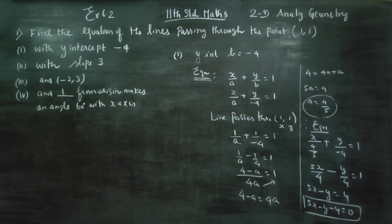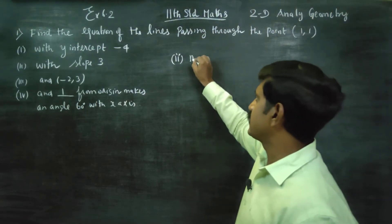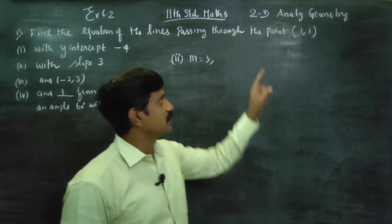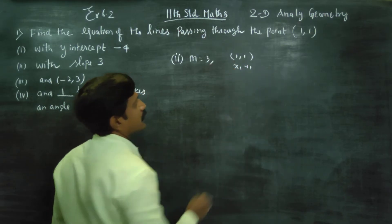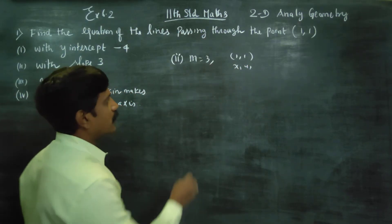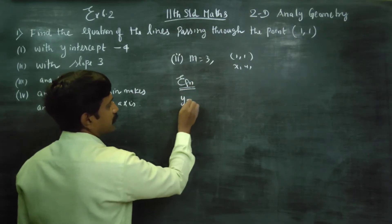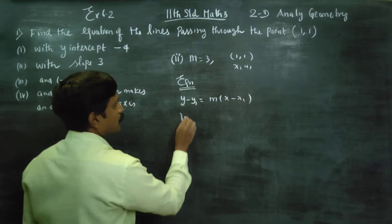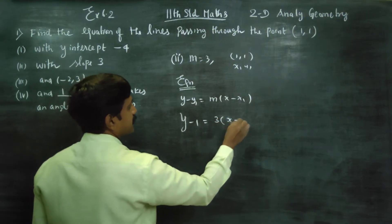Coming to the second subdivision: slope is given, m = 3. A point is given — my point is (1, 1), named as (x₁, y₁). This is the one-point slope formula. The equation of a straight line is y − y₁ = m(x − x₁).